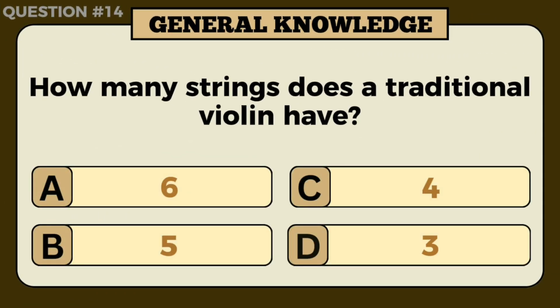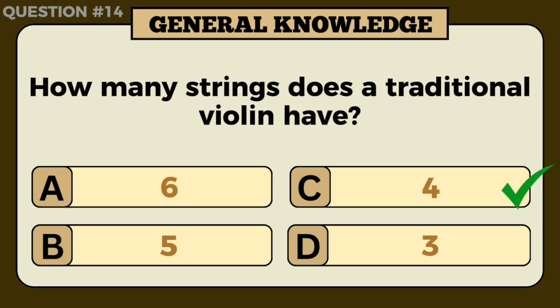How many strings does a traditional violin have? Answer: Four.